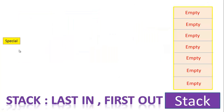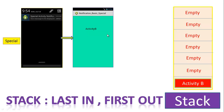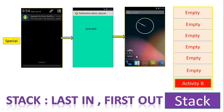In the special activity, as soon as the notification is generated, the stack is filled by only activity B — the activity to which we are migrating. When we click the notification we go to activity B at the top of the stack. Pressing the back button destroys it and the stack becomes empty, so the home screen appears — which is the basic concept of stack in Android.